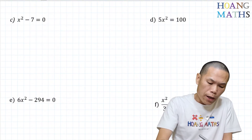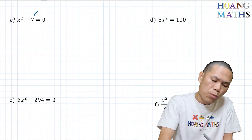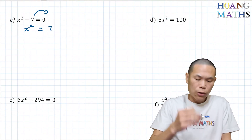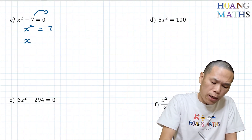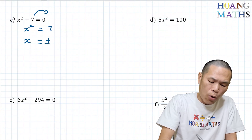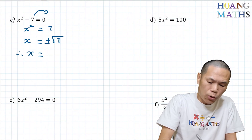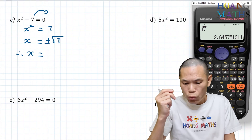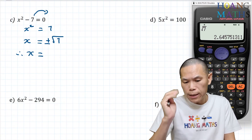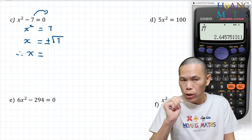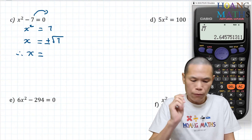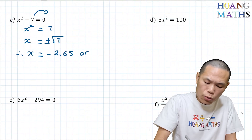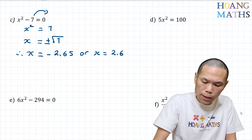Part c: x squared minus 7 equals zero. We need to move the 7 to the other side first. So x squared equals 7. Now we square root both sides: x equals plus or minus square root of 7. Putting that on the calculator gives 2.645. To 2 decimal places: the digit after 4 is 5, so we round up — 2.64 becomes 2.65. So the answer is x equals negative 2.65 or x equals positive 2.65.